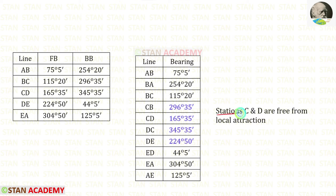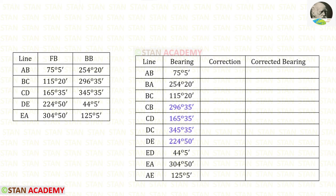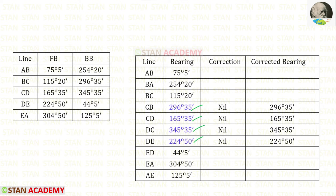We know that stations C and D are free from local attraction. The readings taken at station C and at station D should both be correct. Let us make two more columns: one for the correction and one for the corrected bearings. We know that these four readings — the bearings associated with C and D — are correct, so there is no correction required and we can enter them directly into the corrected bearing column.